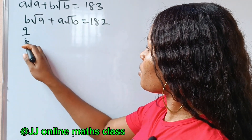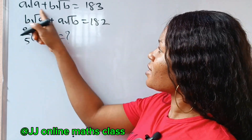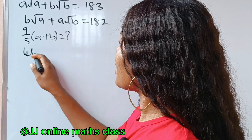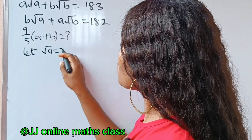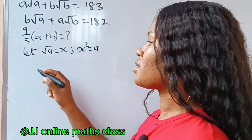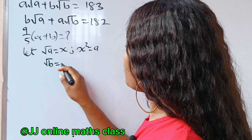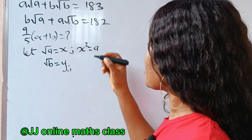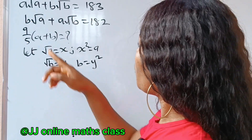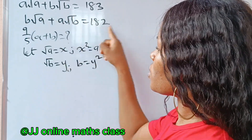We are asked to solve for 9 over 5 multiplied by a plus b, equal to 0. First, let's simplify the question itself. Let's say square root of a equals x, so this simply means that x squared will give us a. Similarly, let square root of b be equal to y, which means that b is equal to y squared. Now we have to substitute these values into these equations.